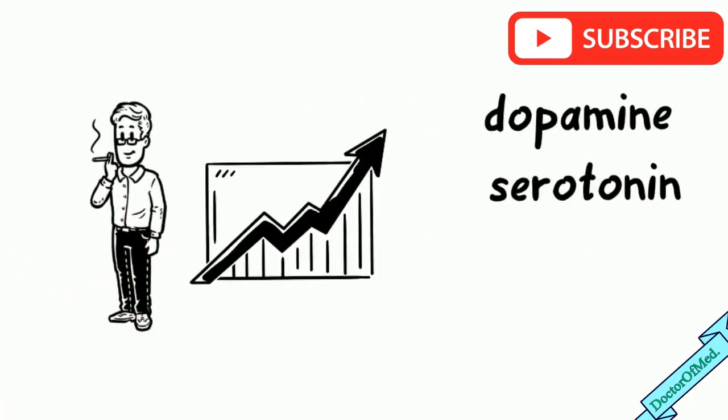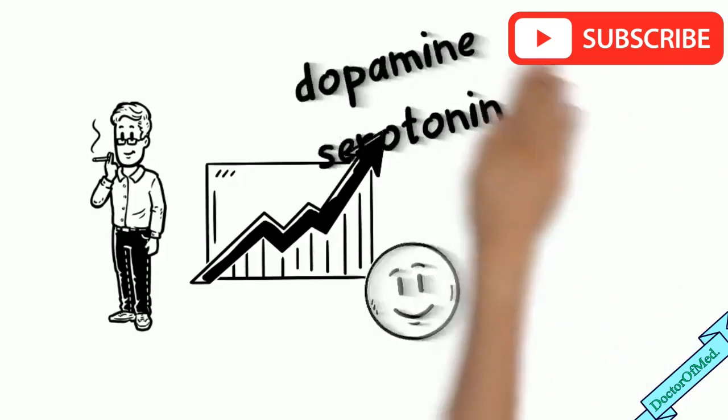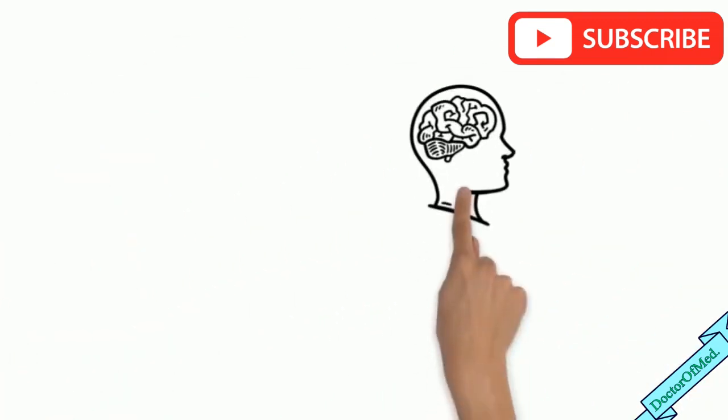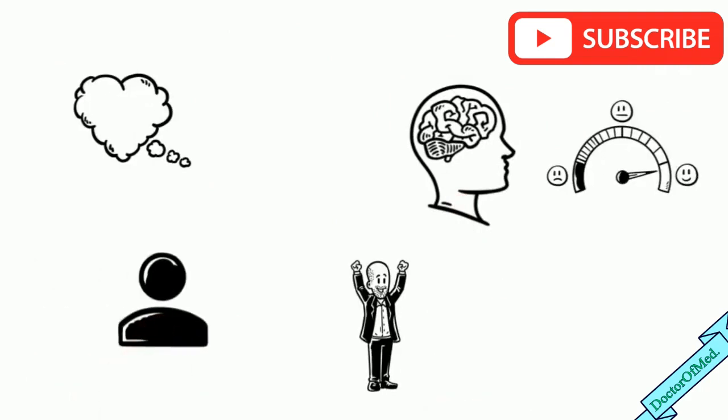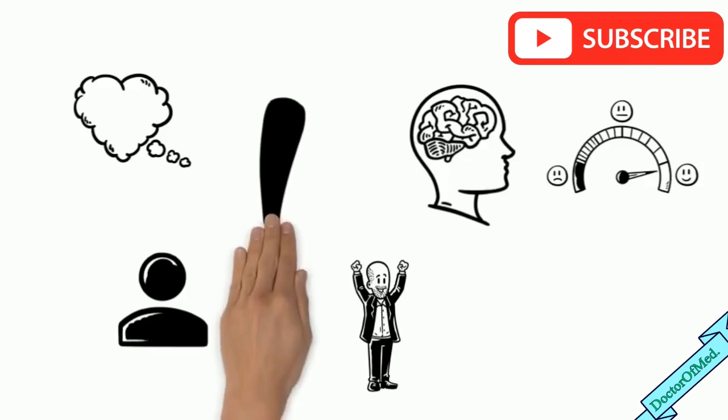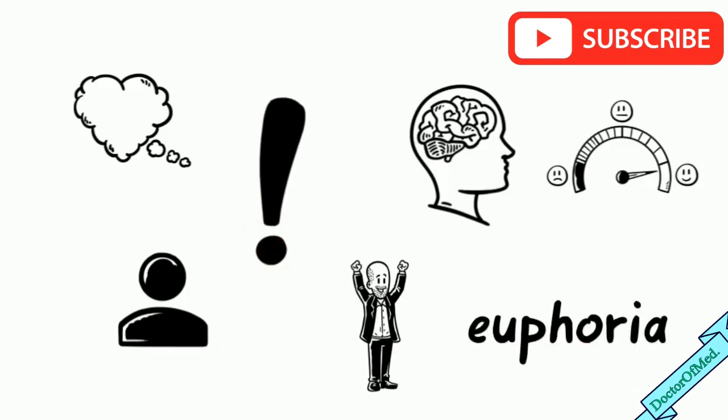Nicotine increases dopamine and serotonin which are pleasure hormones. When these hormones are released, a person feels happy. The feeling of happiness at this stage is without any reason, also called euphoria which means false happiness.